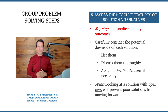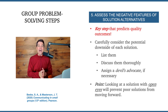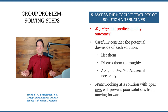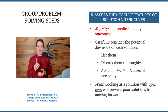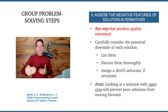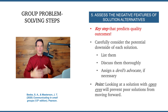Number five is another key step: assess the negative features of the solution alternatives. This is the third key step that predicts quality outcomes. Carefully consider the potential downside of each solution — list all of the potential problems and discuss them thoroughly. You may even want to assign a devil's advocate or two to play the role of pointing out flaws and criticizing ideas. Looking at a solution with open eyes will help prevent poor solutions from moving forward. If you really look at the problems, it'll prevent you from advancing bad solutions into the decision-making phase where they actually get implemented. This will stop poor decisions from moving forward if you do this step thoroughly.